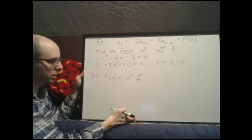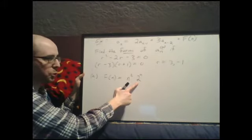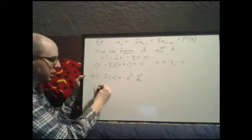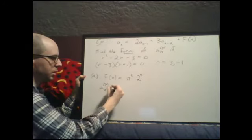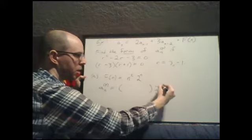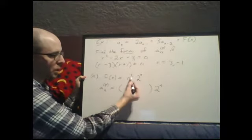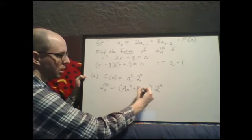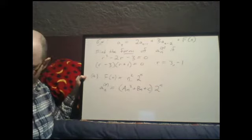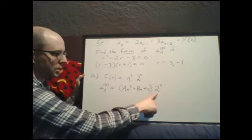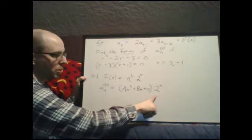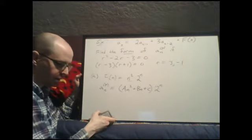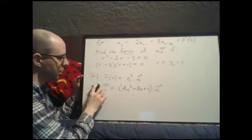Part a: f(n) equals n² times 2 to the n. The base of the exponential part is 2, which is not one of our roots 3 and negative 1, so we're in case 1. a_p(n) is a degree-2 polynomial times 2 to the n: (a·n² plus b·n plus c) times 2 to the n. This has no relation to the homogeneous solution, so no adjustment needed.